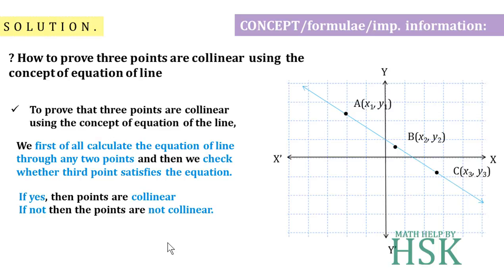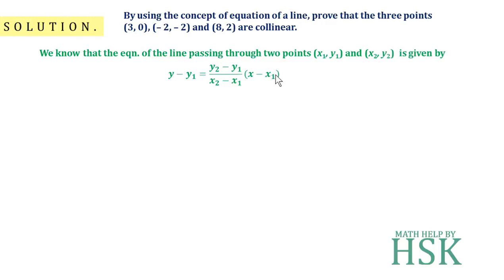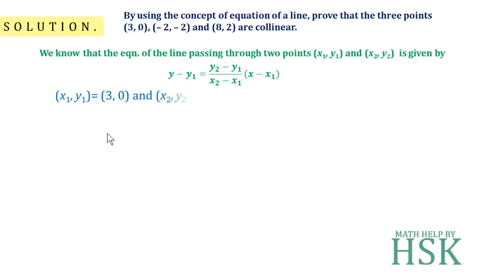The equation of a line passing through two points (x₁, y₁) and (x₂, y₂) is given by: y − y₁ = [(y₂ − y₁) / (x₂ − x₁)] × (x − x₁).